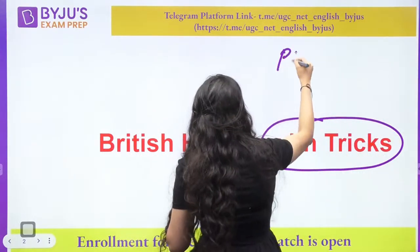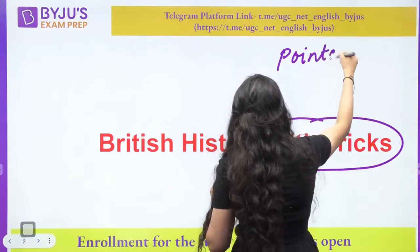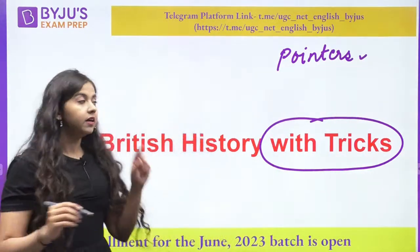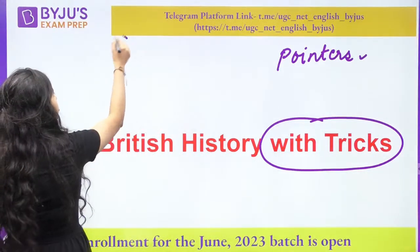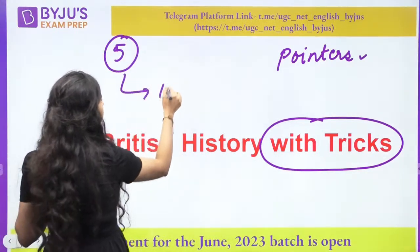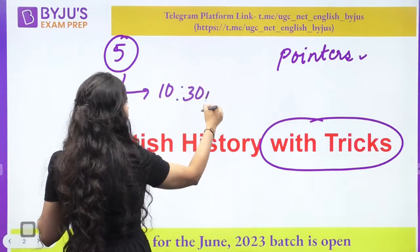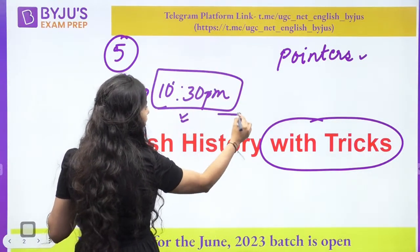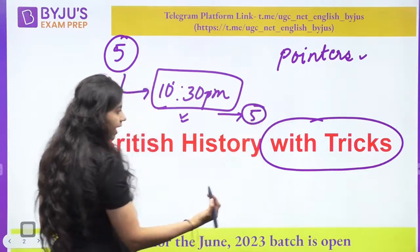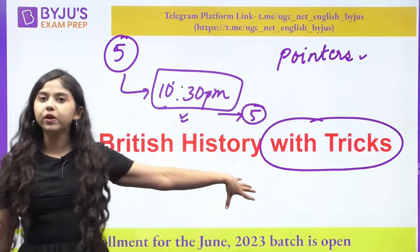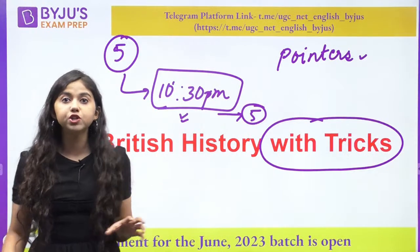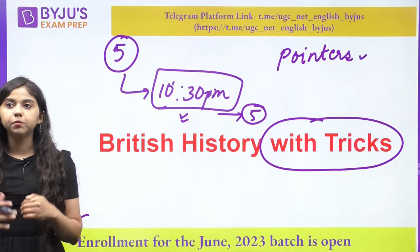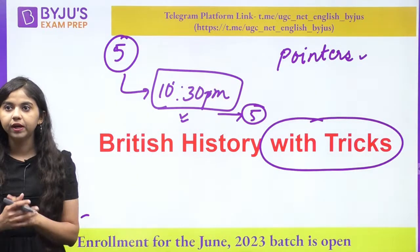Today we will be looking at British history via pointers. There are a couple of interesting pointers we will be covering. The first five pointers were from a free app session at 10:30 PM — we couldn't complete that session. So the first five pointers are a quick revision from that, and after that we will look at other pointers. Please remember British literature becomes important; please cover British history in the best possible manner.